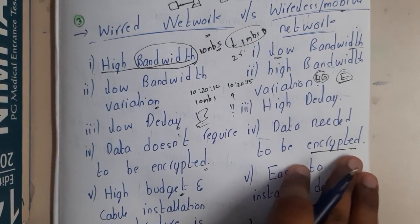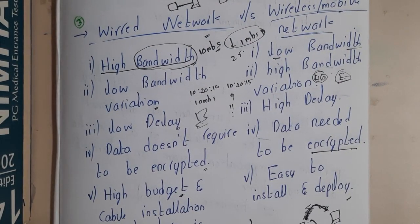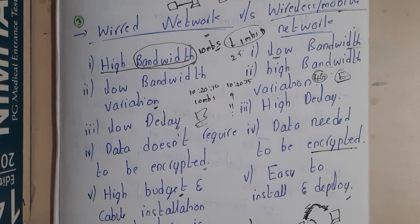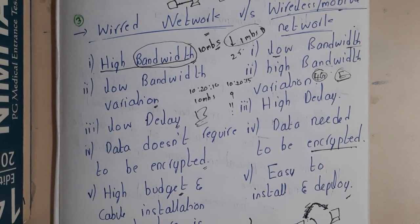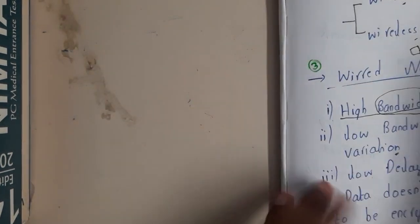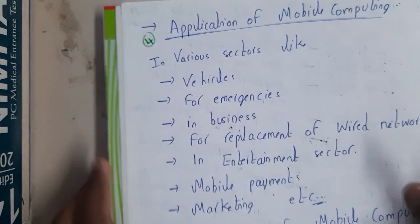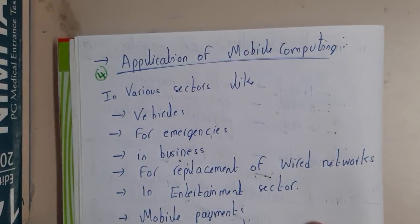Remember bandwidth simply as speed. We'll be discussing frequency ranges and radio wave frequencies in future lectures. I hope everyone got a basic idea of all the differences. In the next lecture we'll be discussing applications, characteristics, and disadvantages of mobile computing. Thank you for watching.